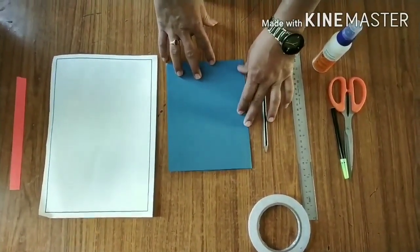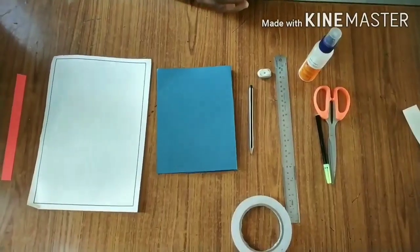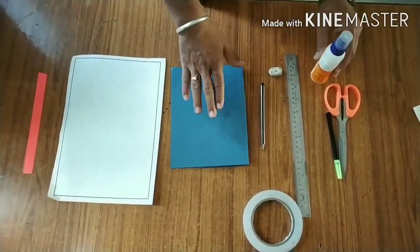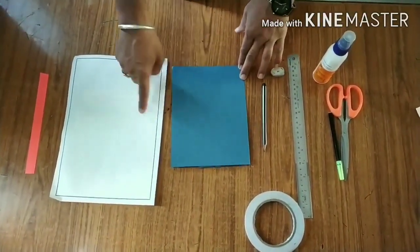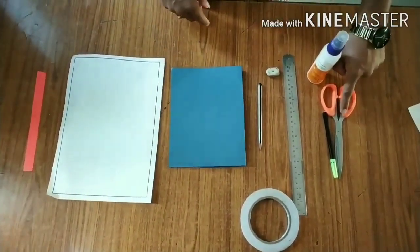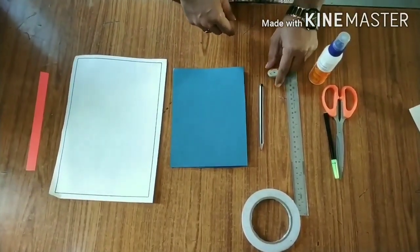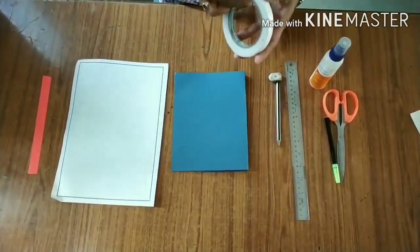Today we are going to make a moving boat. Material required to make this boat is three color papers of your choice, scissors, fevicol, compass or any circular thing to make a circle, and sketch pens.